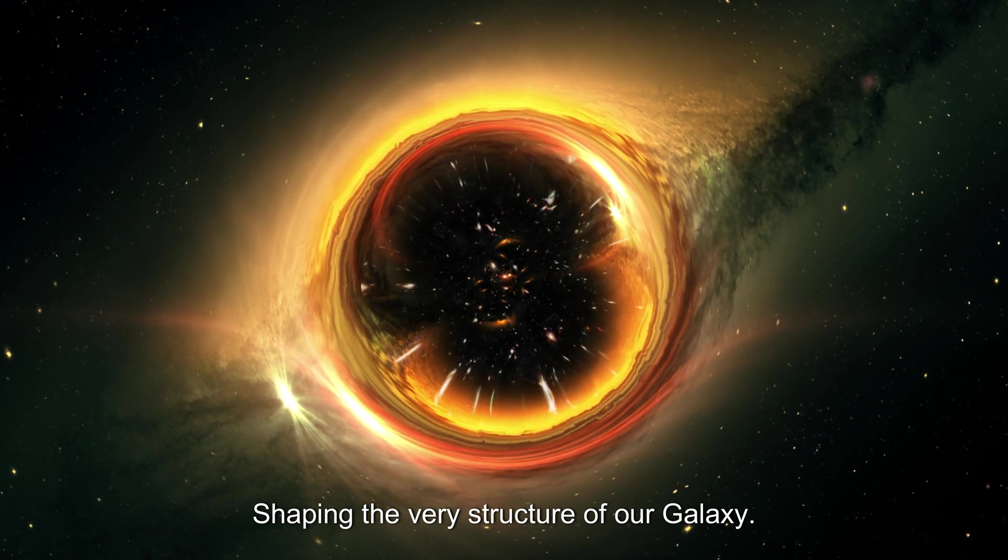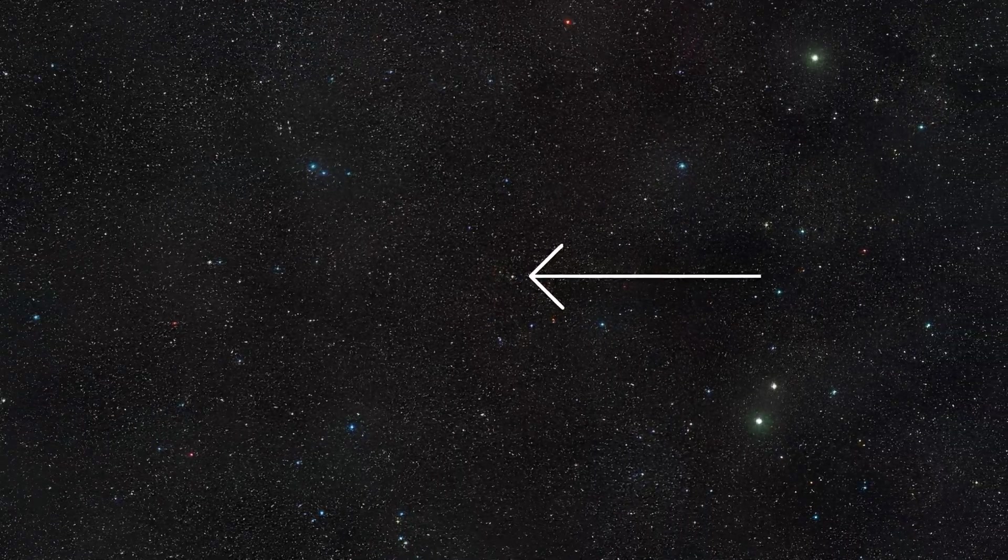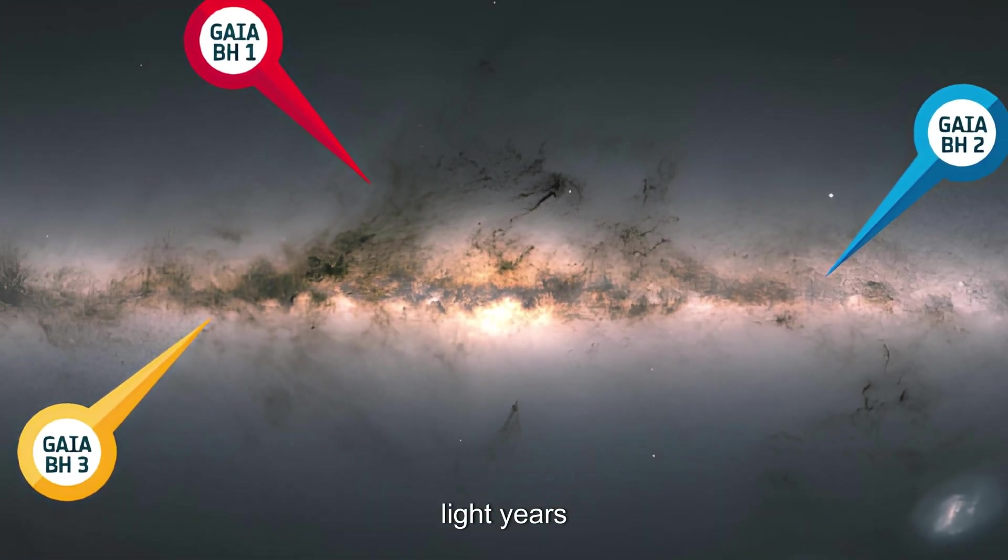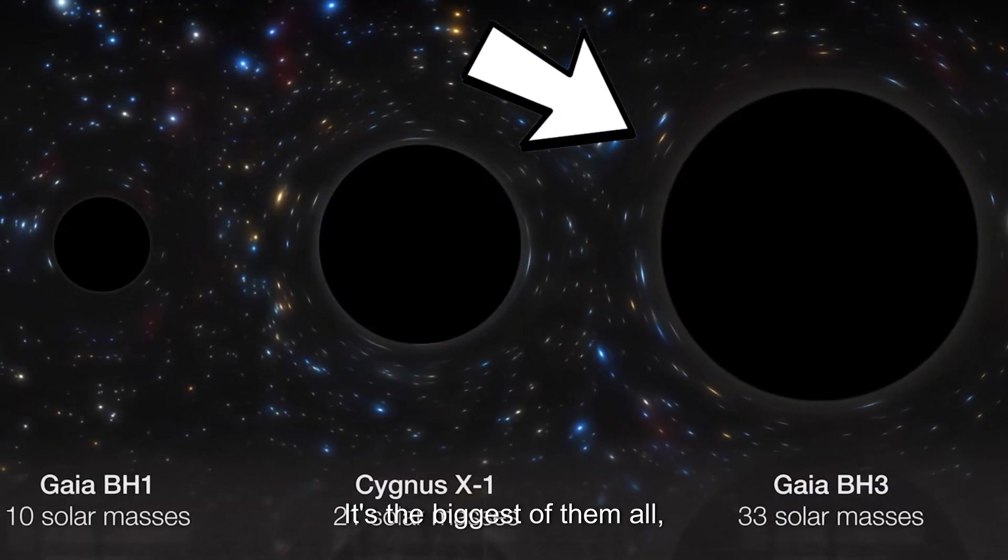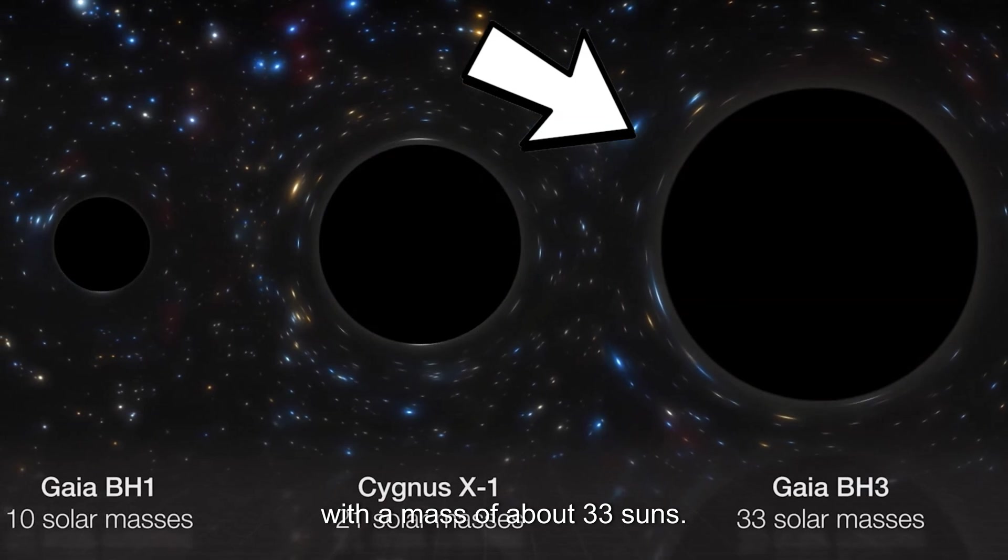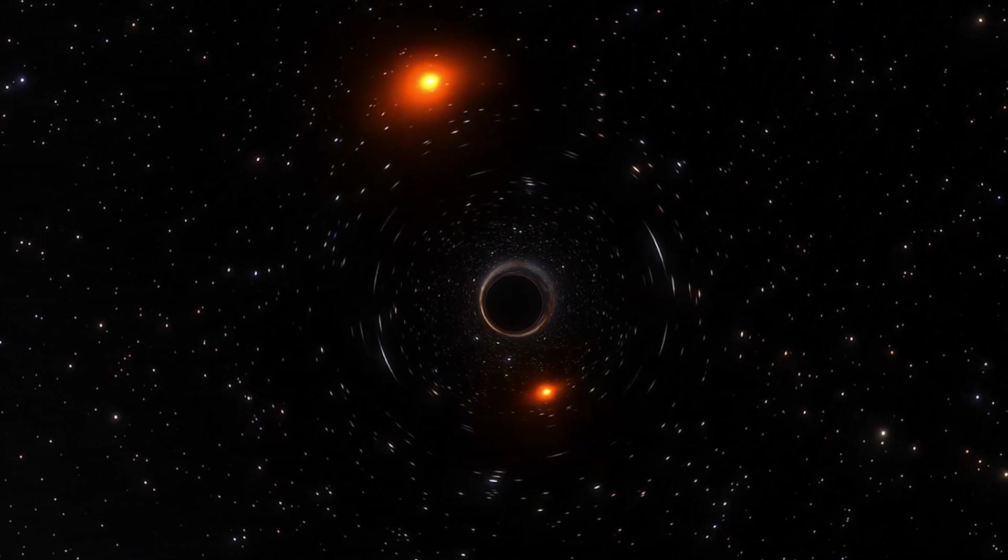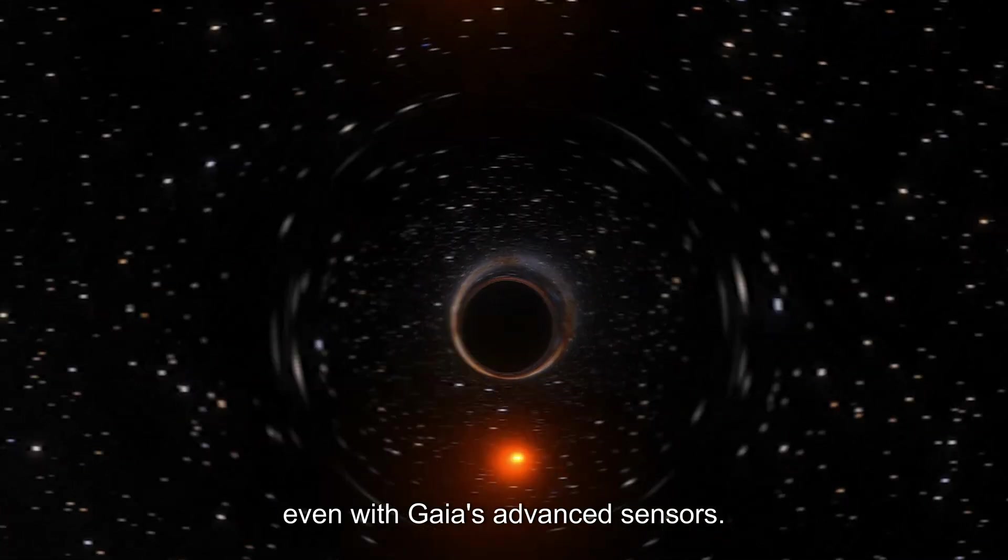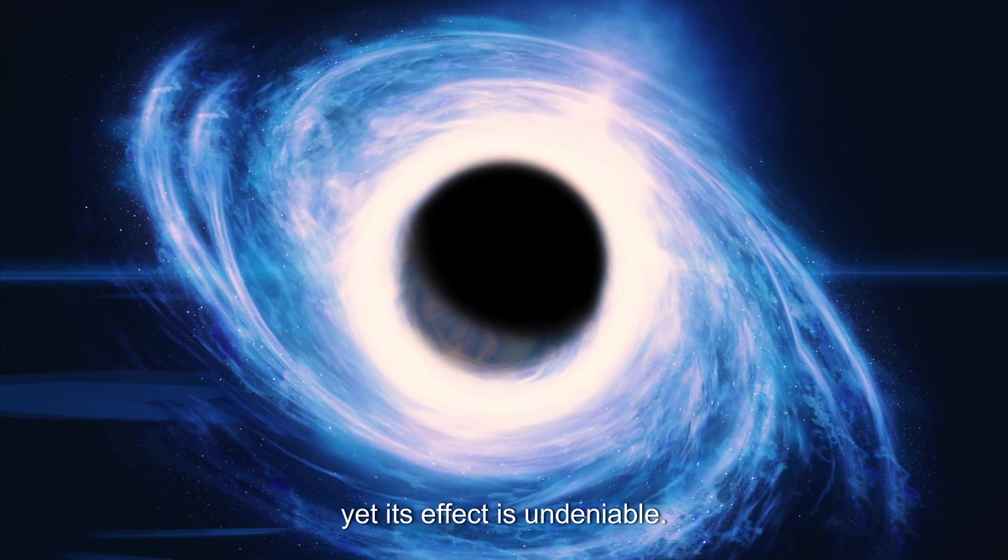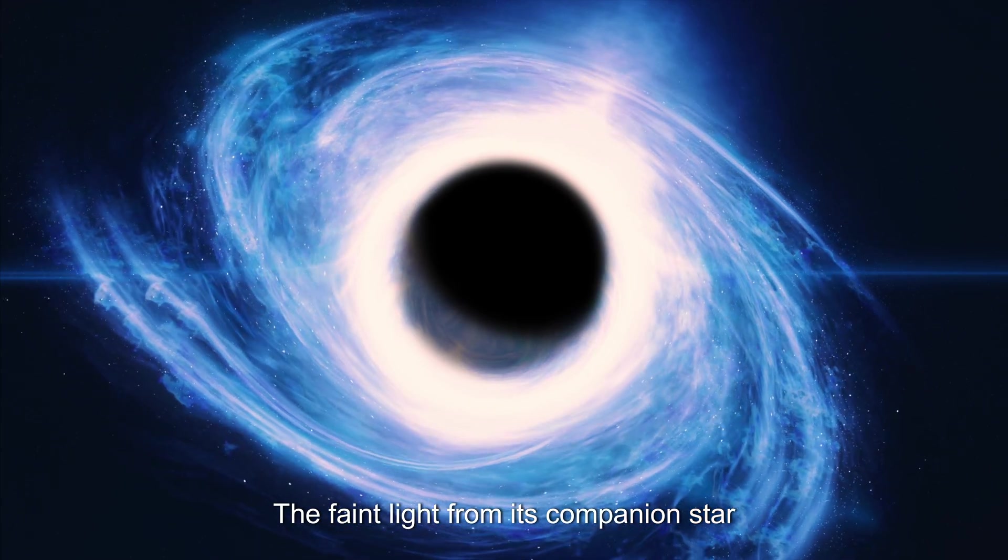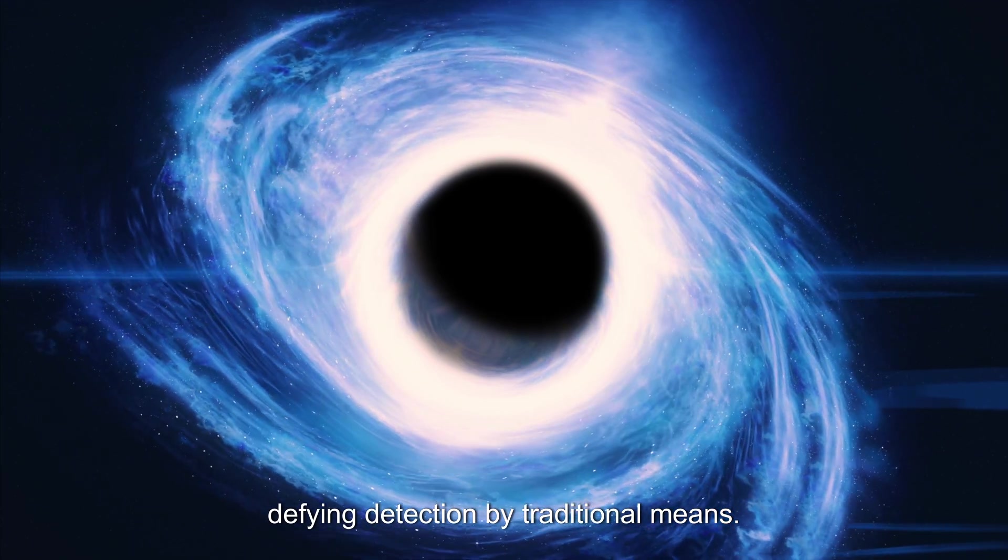Now let's move our telescope to the third black hole: Gaia BH3. This black hole sits at a distance of 3,000 light years and is the most mysterious black hole out of these three. It's the biggest of them all, with a mass of about 33 suns. What makes this system remarkable is its faint companion star, which is barely detectable even with Gaia's advanced sensors. This black hole's gravitational influence is subtle, yet its effect is undeniable. The faint light from its companion star reveals a quiet, hidden giant defying detection by traditional means.